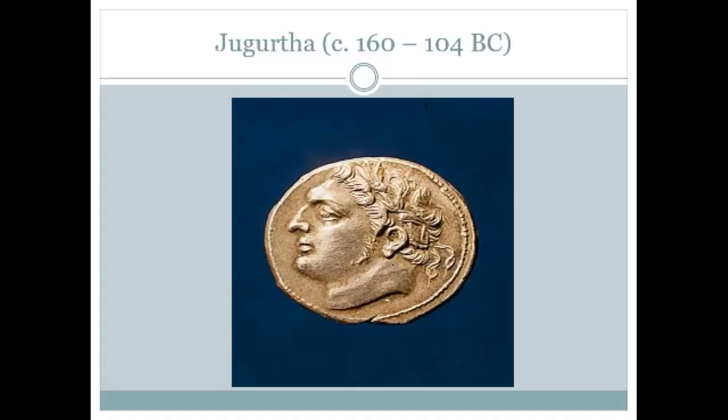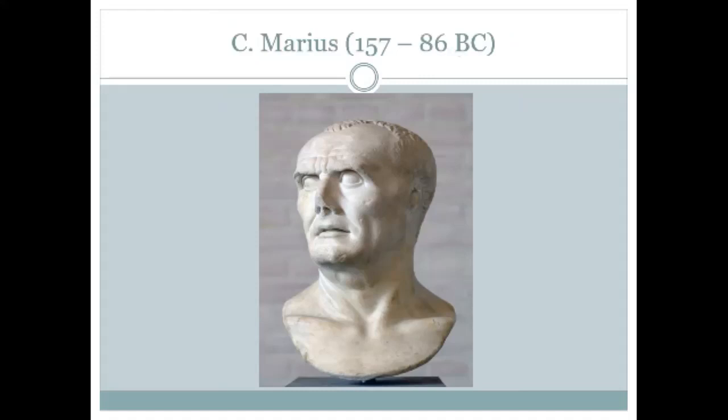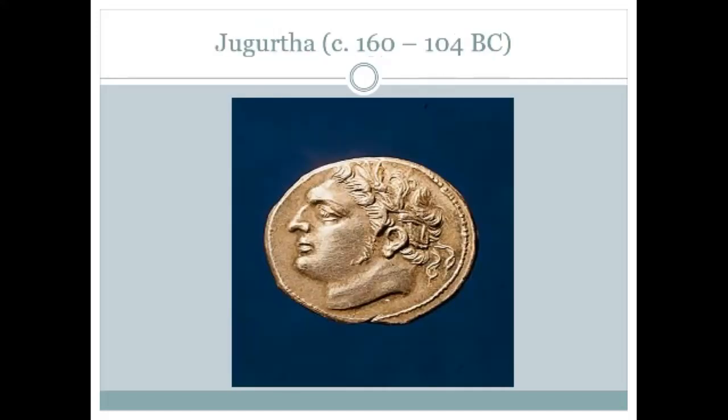Jugurtha dragged on this war until 111 BC for four years, at which point Marius, serving as a minor officer in Numidia, figured he knew what he could do to bring it to a swift end. He stood for and was elected to the consulship in 107 BC on precisely the promise to the people: I will bring you Jugurtha's head on a plate. He didn't quite end it in one year — it took him two years — but he did a swift job. Jugurtha was cornered, defeated, and eventually physically captured alive and brought to Rome in 105 BC.